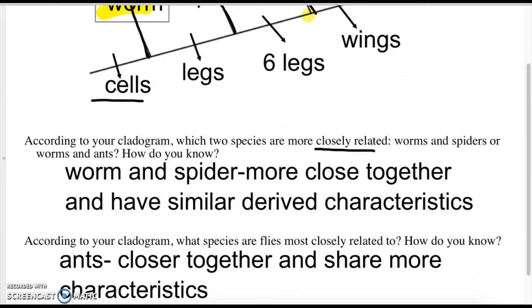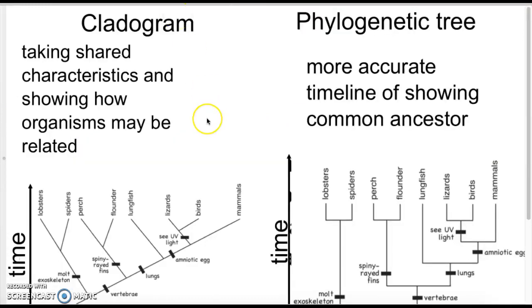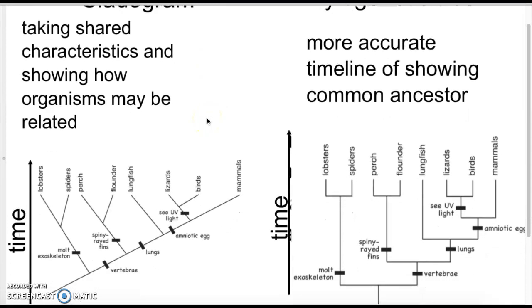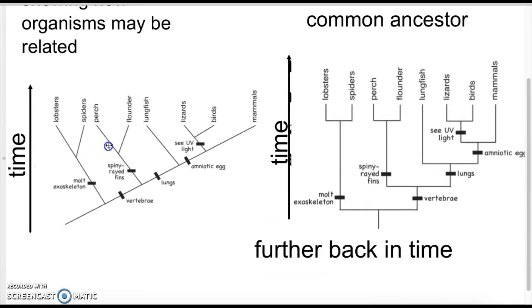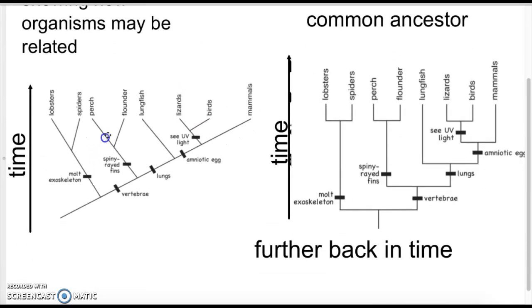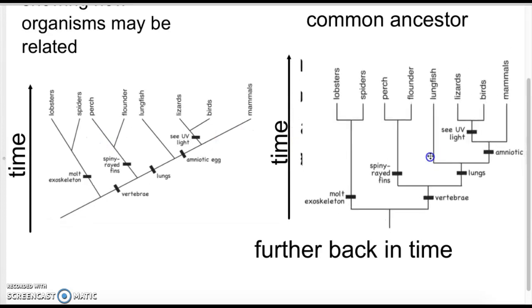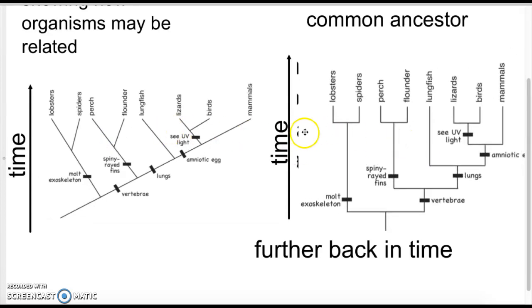All right, so we have cladograms, and then we have something called phylogenetic trees. I just want to give you another picture. This is a picture of a cladogram. This is a picture of a phylogenetic tree. They both show the same thing. You have lobster, lobster, spider, spider's perch, perch, flounder.